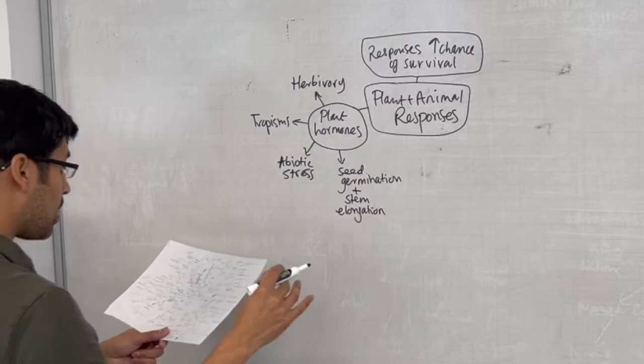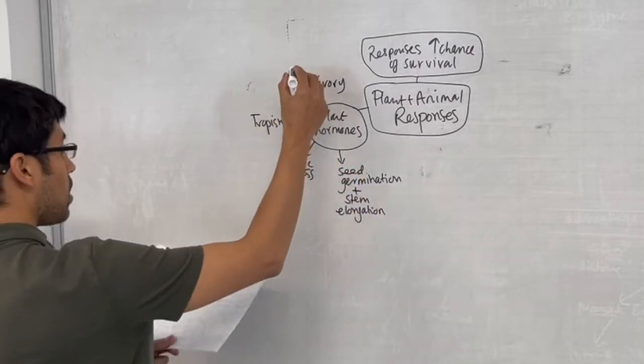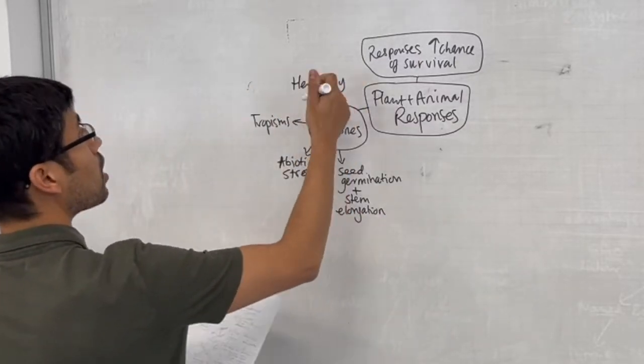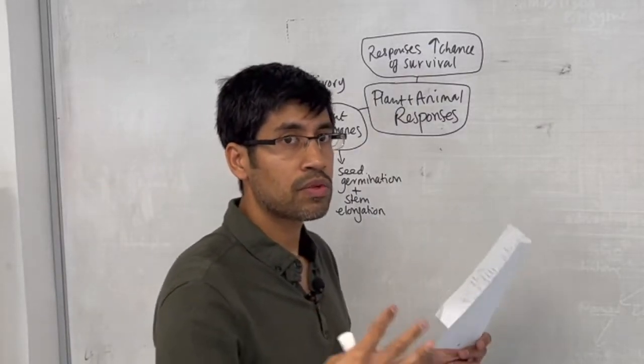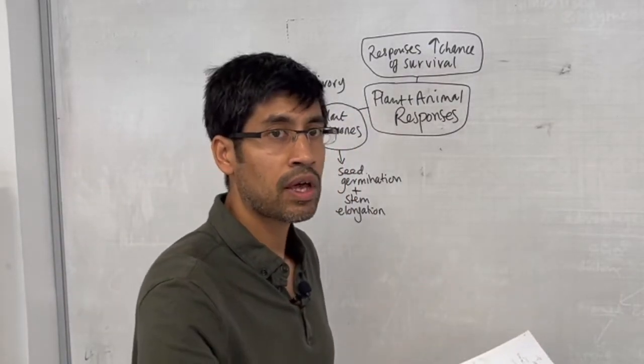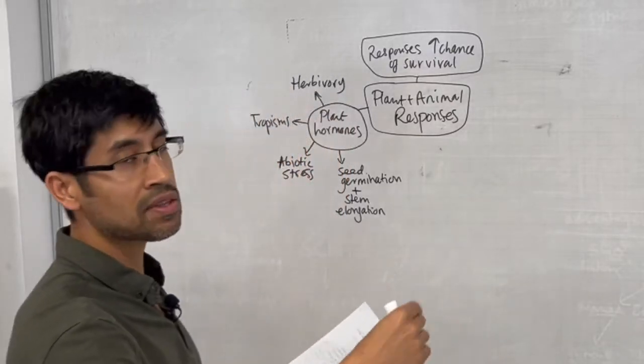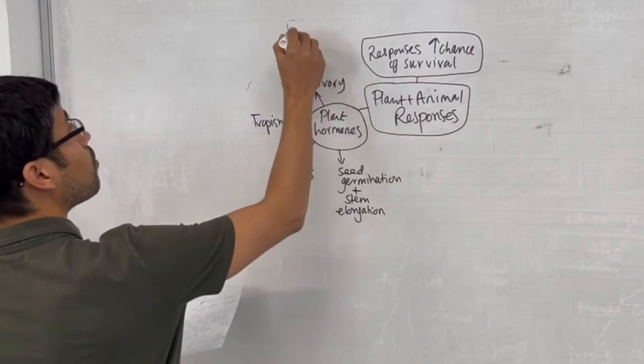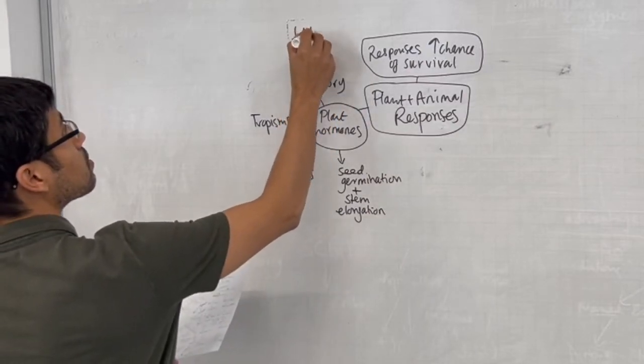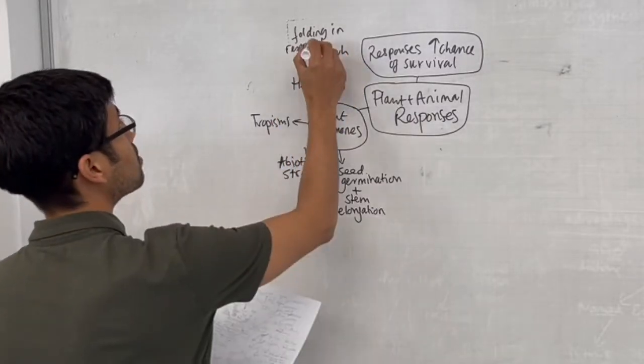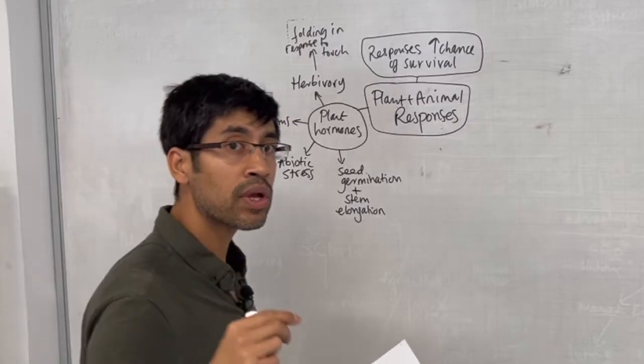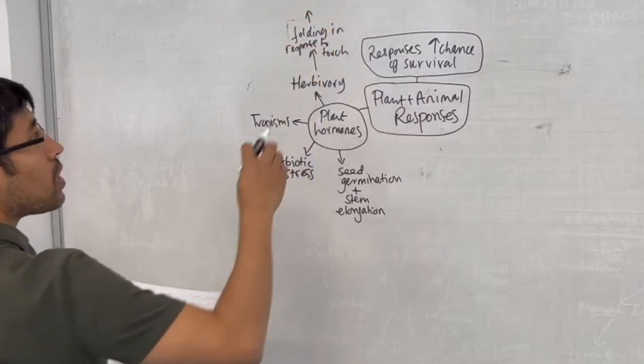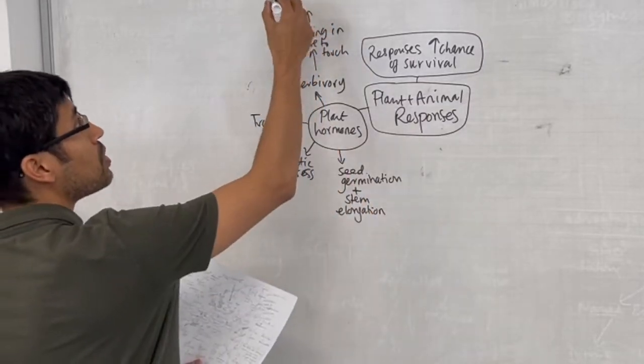We start with herbivory, which means getting eaten by an animal or insect pests. The main responses include folding in response to touch. I think I'm going too slowly here, so we need to speed it up. This is a very quick summary of all the content. I'm just going to put an arrow here mentioning the mechanism with ion movements across membranes and osmosis.